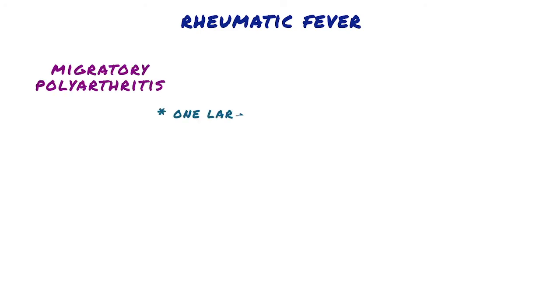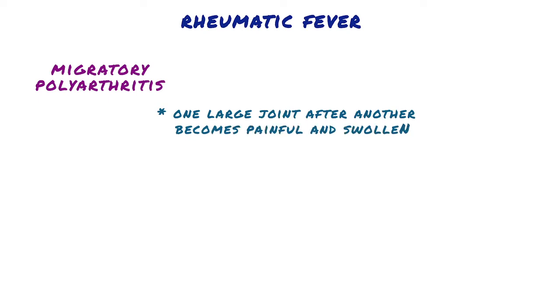Rheumatic fever is characterized by a constellation of findings, the most common of which is migratory polyarthritis of the joints, in which one large joint after another becomes painful and swollen for a period of days and then subsides spontaneously, leaving no residual disability.